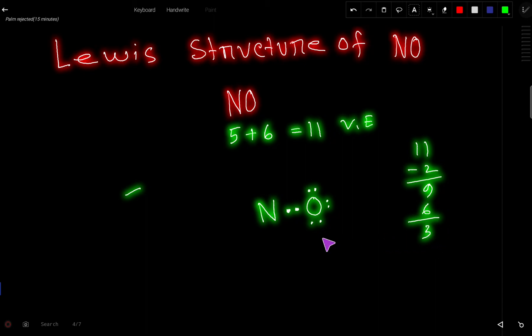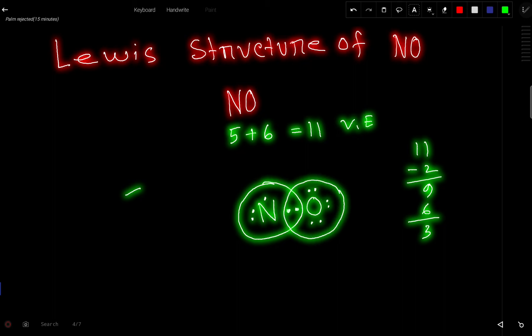These three valence electrons will come over this nitrogen. So here two, here one. Now this nitrogen has five valence electrons and this oxygen has eight valence electrons.